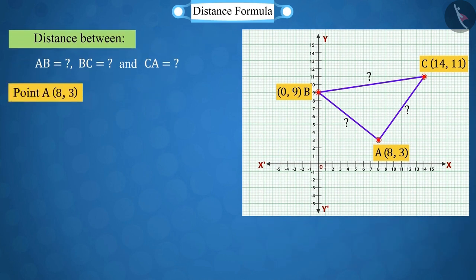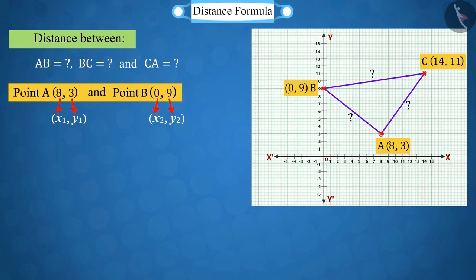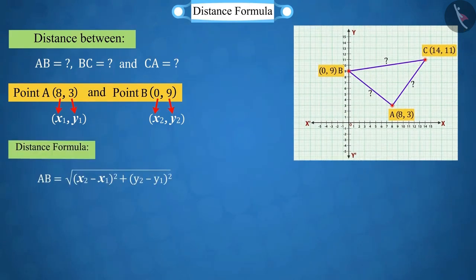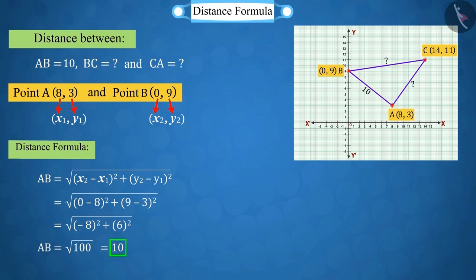Suppose the coordinates of point A, that is x1, is equal to 8 and y1 is equal to 3. And the coordinates of point B are equal to x2, equal to 0 and y2 equal to 9. According to the distance formula, we get the value of AB as 10.